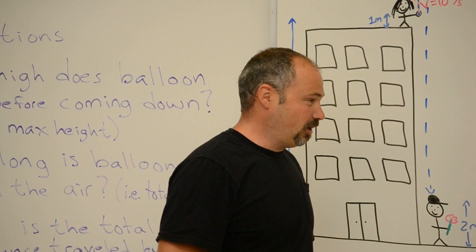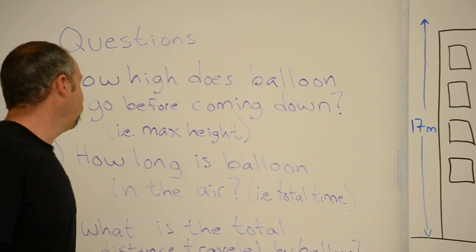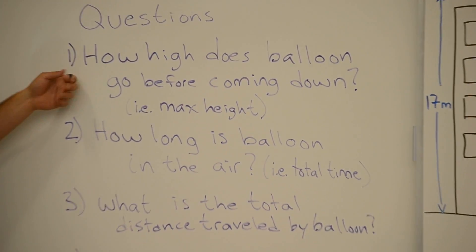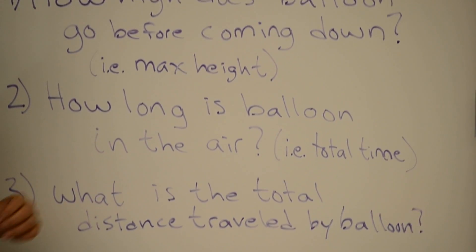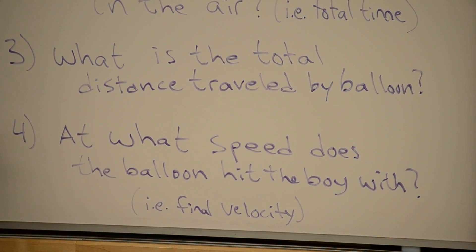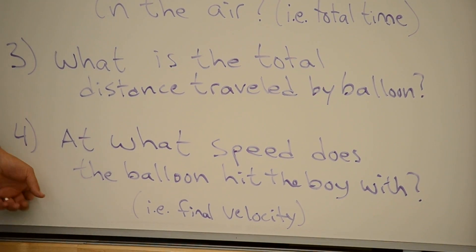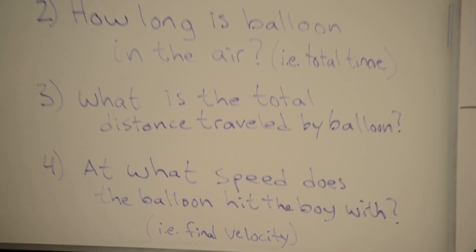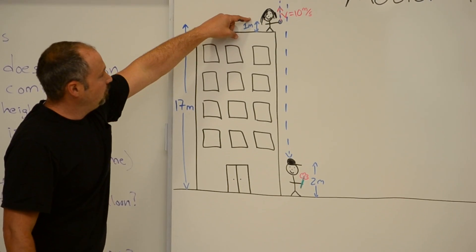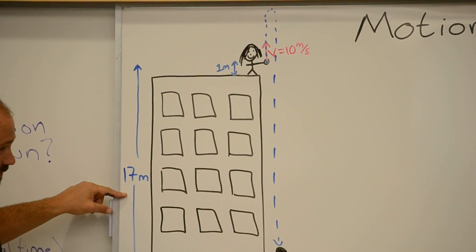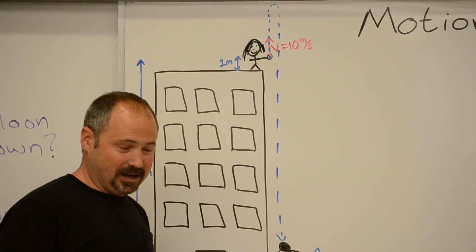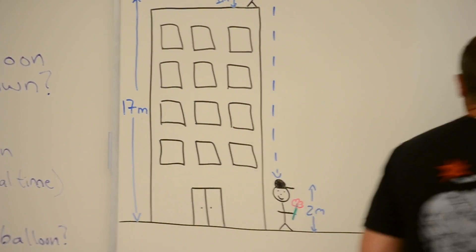We're going to solve this problem. The questions we want to know are: how high does the balloon go before it starts coming down? How long is the balloon in the air? How much total distance has the balloon traveled? And at what speed does the water balloon hit his head? And here are the dimensions. The building plus where she releases the balloon is 17 meters. So the building height itself is only 16. And he stands 2 meters high. Great. Let's go about solving this problem.